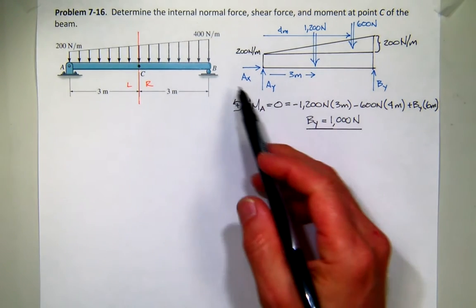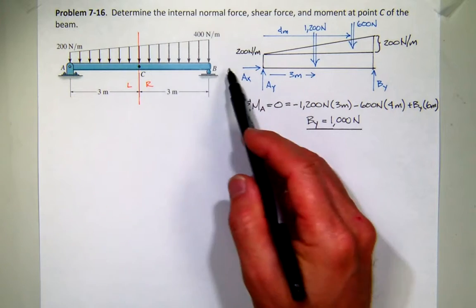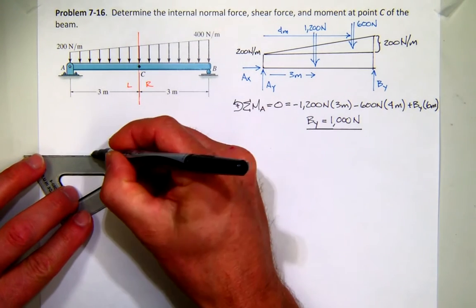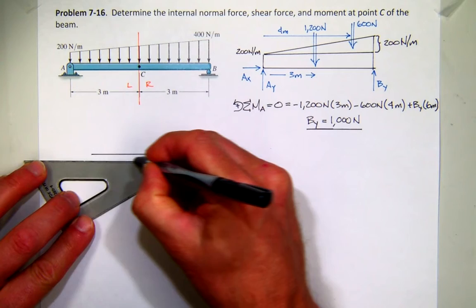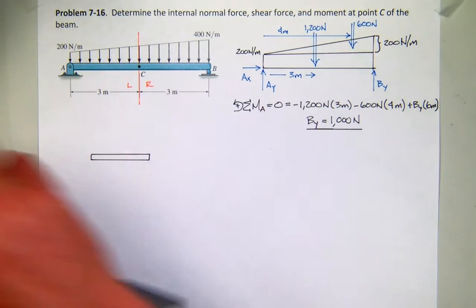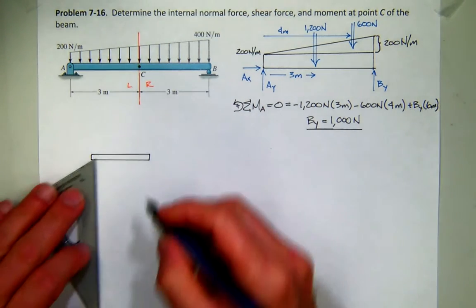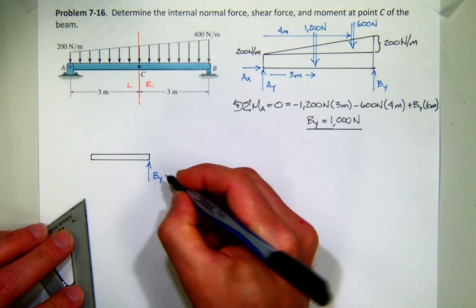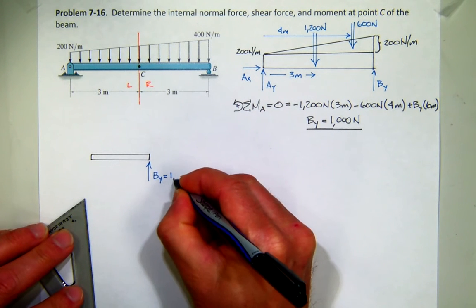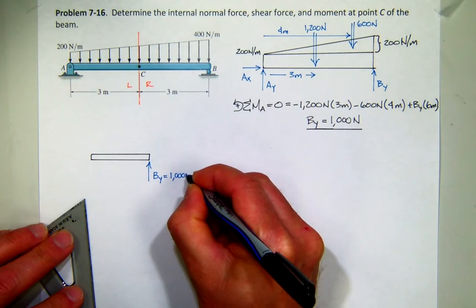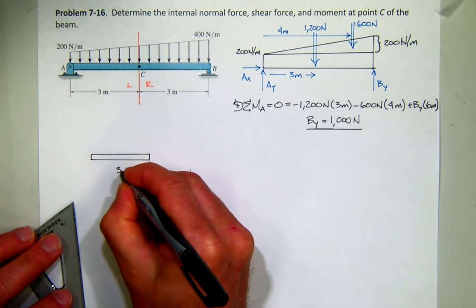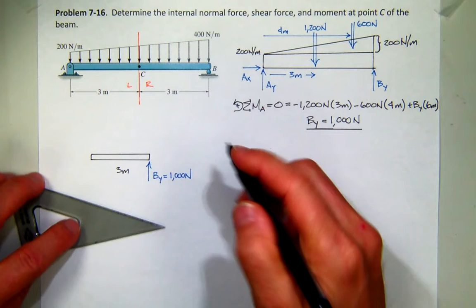So now we're going to cut it at C and work the right-hand side. So I'm going to draw a free-body diagram for that. There's a chunk of the beam.